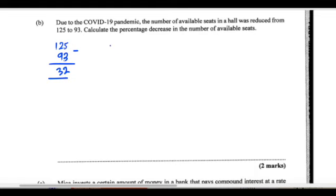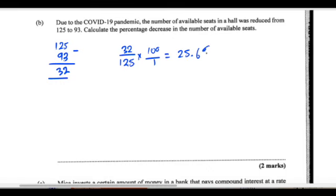So with that reduction, calculate the percentage decrease. The decrease is 32 over the original number 125, multiplied by 100, and that gives us the percentage decrease. 32 divided by 125 multiplied by 100 gives us a decrease of about 25.6 on the calculator. So there's a 25.6% decrease.